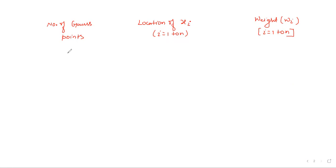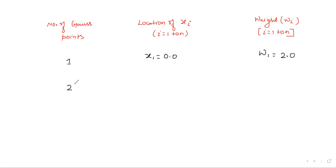If the number of Gauss points is 1, then i equals 1, so x1 equals 0.0 and w1 equals 2.0. If the number of Gauss points is 2, we have x1 and x2, and the values are x1 equals 0, w1 equals 2.0 for n=1.